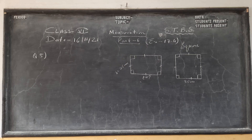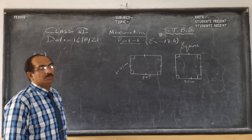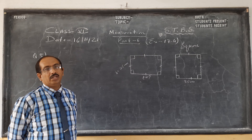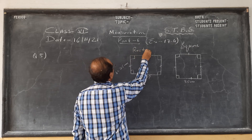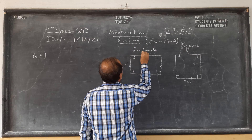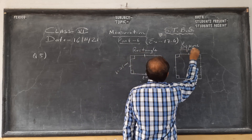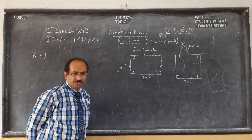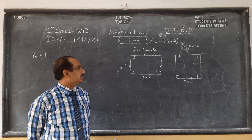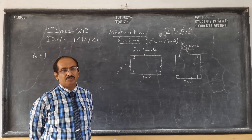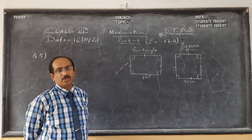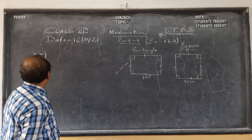Hello children, we move to part 6 of our video lesson on area. Perimeter we have already done, area of square and rectangle. So if you have seen my part 4 and 5, in part 4 I gave you the concept of area and in part 5 I have done almost half of the chapter. The rest of the important questions I am going to do now.